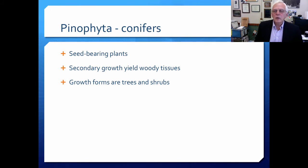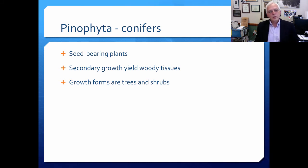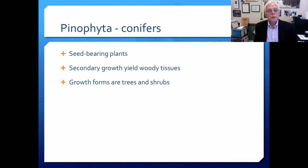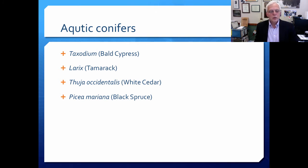Next, I'd like to talk about the Pinophyta, or conifers. Some of you may think it's silly that pines are aquatic macrophytes, but in fact there are many that live specifically in very aquatic habitats, mostly in riparian areas or wetlands. These are seed-bearing plants, because they have cones that have seeds in them. Their secondary growth yields woody tissues, and the growth forms would be trees and shrubs. The four groups we'll talk about briefly would be Taxodium — the bald cypress — Larix — which are tamarack — Thuja occidentalis — the white cedar — and black spruce, Picea mariana.